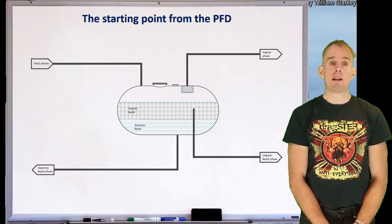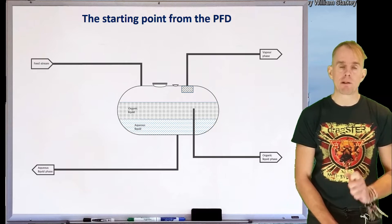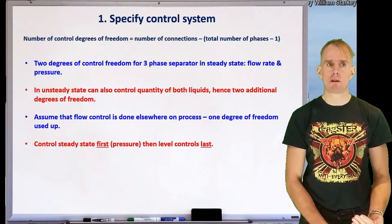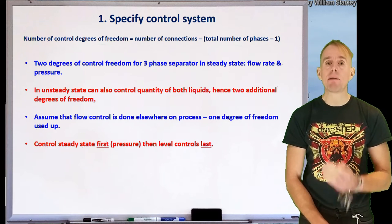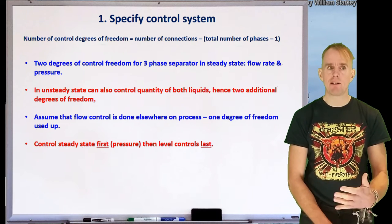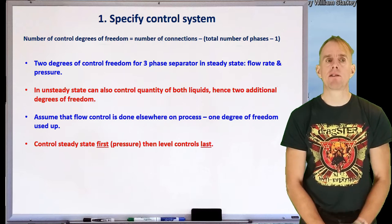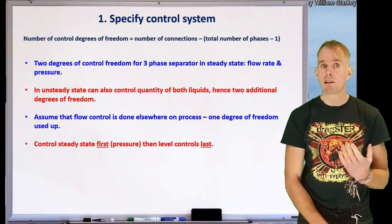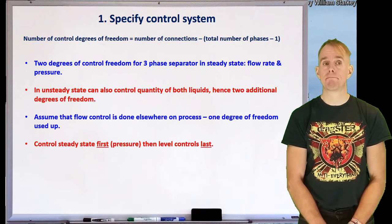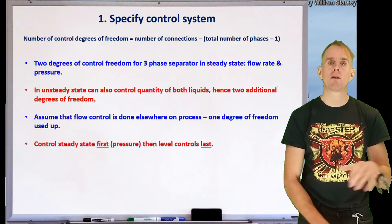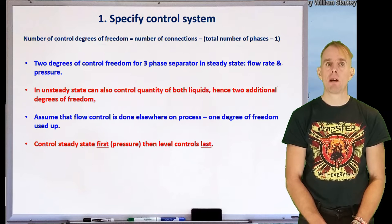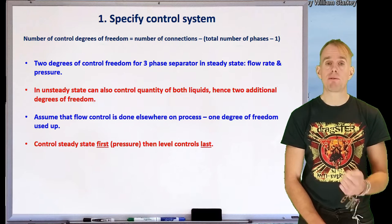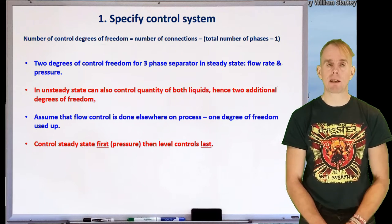The first thing we're going to do is think about the process and process control. To do this we need to figure out how many things we can control. For steady state, there's a rule of thumb: the number of control degrees of freedom equals the number of vessel connections minus the total number of phases minus one. For our three-phase separator, we've got four vessel connections — feed plus three streams that leave — and three phases: vapour and two immiscible liquids.